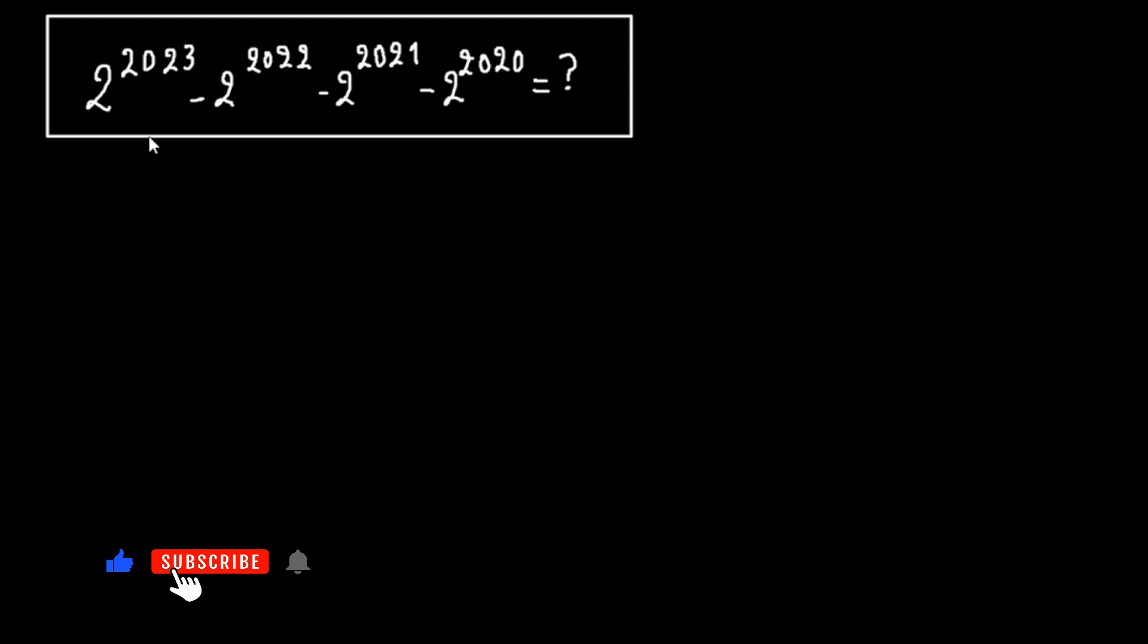Let's start to see how we can solve this. We see that all the numbers have the same base, and the exponents are almost the same. We start from 2020 and go to 2023.